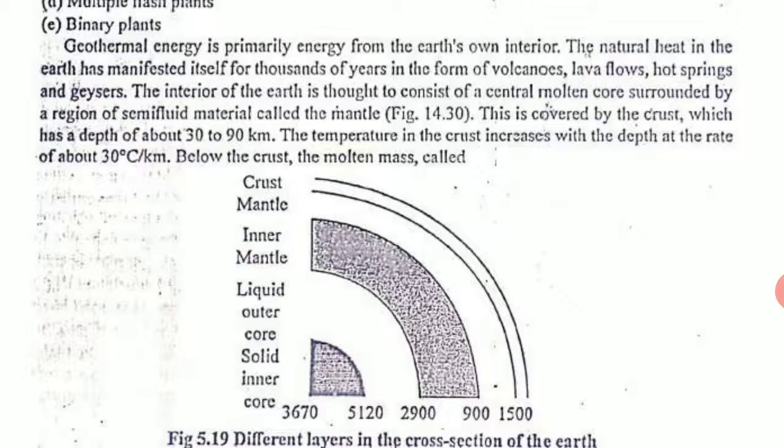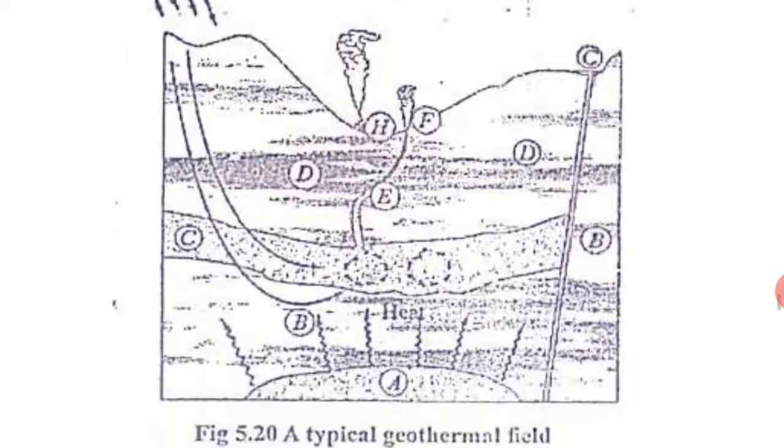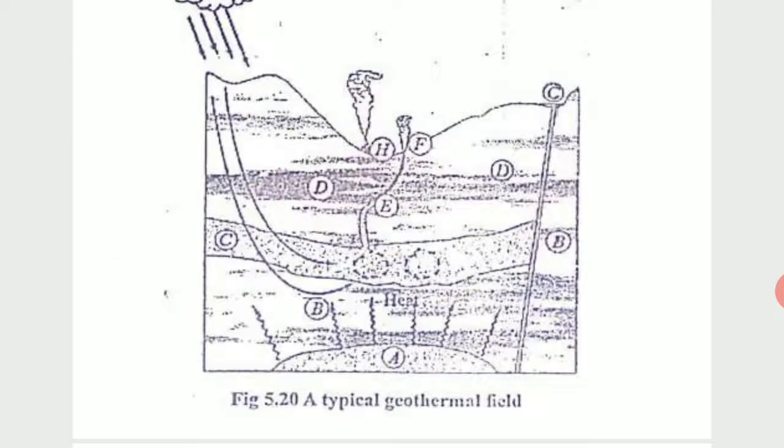It is covered by a crust which is almost 30 to 90 kilometers in depth. The diameter of earth is around less than 13,000 kilometers. You can see a sketch here of the geothermal field.